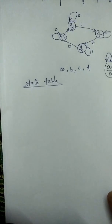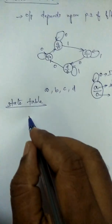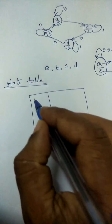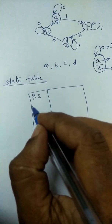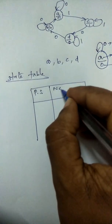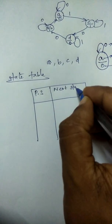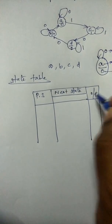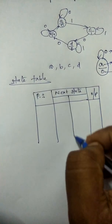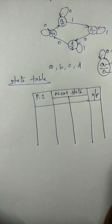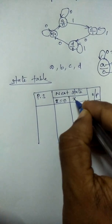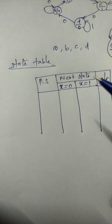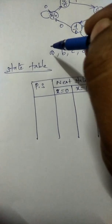In the state table we have the present state (PS), next state, and output values. We have next state for two inputs: when x equals 0 and when x equals 1. We will go through the present states in order, starting with state A.